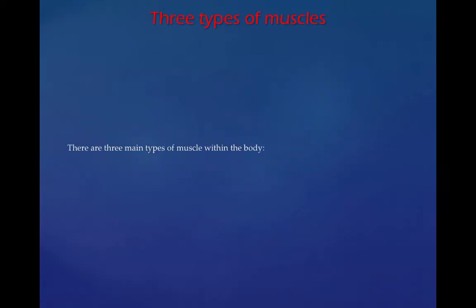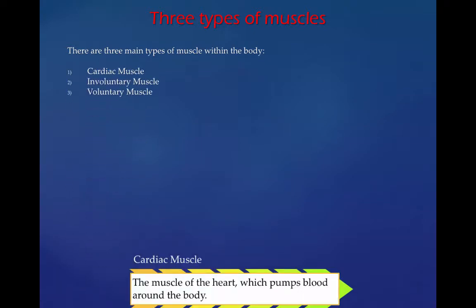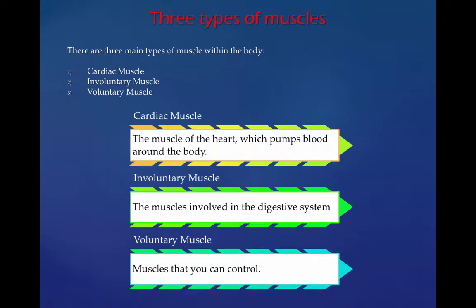There are three types of muscles: the cardiac muscle, the involuntary muscle, and the voluntary muscle. Cardiac muscles are the muscles of the heart which pumps the blood around the body. Involuntary muscle is the muscle involved with your digestive system. And voluntary muscles are muscles that you can control.